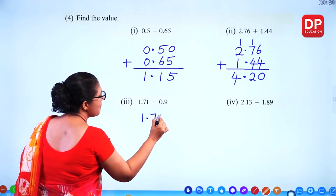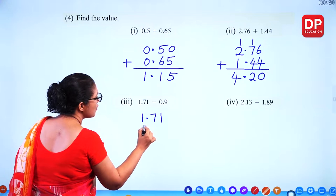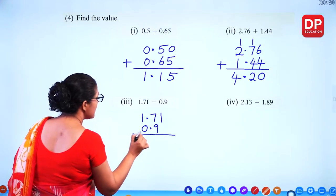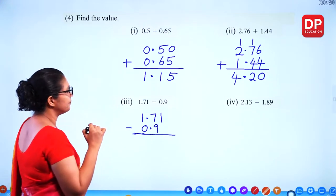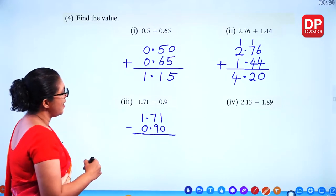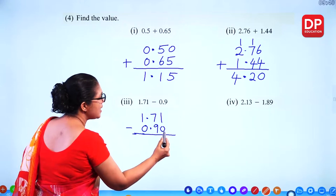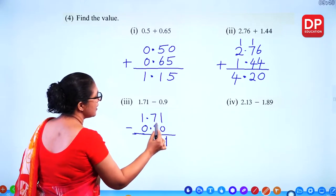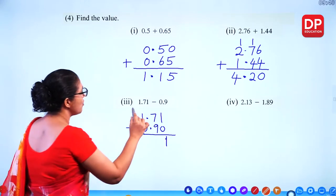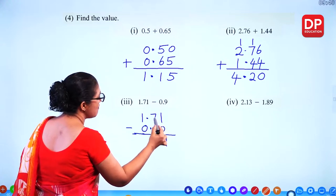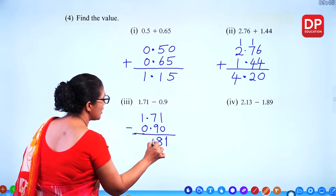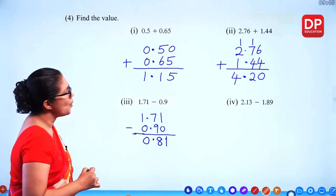For decimal subtraction: 1.71 minus 0.9 — put a zero in the empty place. 1 minus 0 = 1. We can't subtract 9 from 7, so we borrow 1, making it 17 minus 9 = 8. The answer is 0.81.